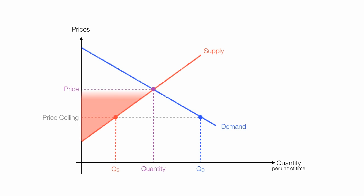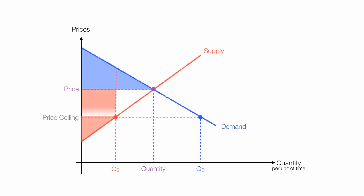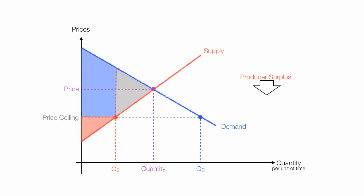Before the price ceiling, producer surplus was here, but after the price ceiling it shrinks. Producer surplus is the area above the supply curve and below price. Consumer surplus before the price ceiling was this blue triangle. I'm going to draw my quantity supplied line all the way up to the demand curve. This rectangle that used to be part of producer surplus now belongs to consumer surplus. Since quantity supplied is less than equilibrium quantity, there are some producers who used to produce that no longer get a benefit — that area is deadweight loss. There's also a deadweight loss to consumers as well. So there is a transfer of producer surplus to consumer surplus — this rectangle right here.